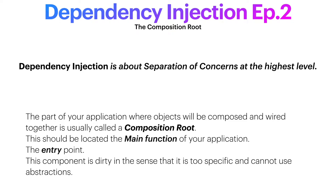Nothing outside this component depends on anything inside it — all the dependencies point outward. This is where you put the creation of your objects, using factories, switches, constructors. It's the dirtiest of them all. Why dirty? Dirty in the sense of having the most concrete definitions of everything. When your functional set uses an abstraction, making it flexible, the composition root has created the concrete implementation for that abstraction. It's dirty in the sense of being very specific, rather than generic.